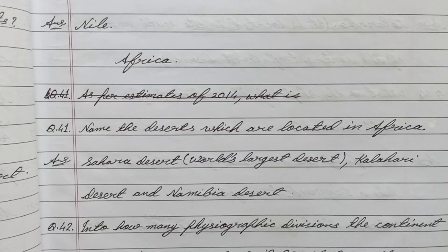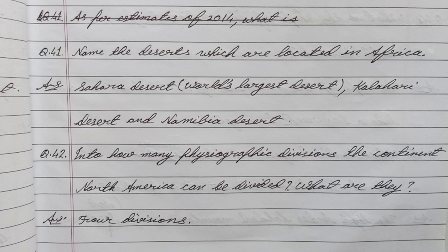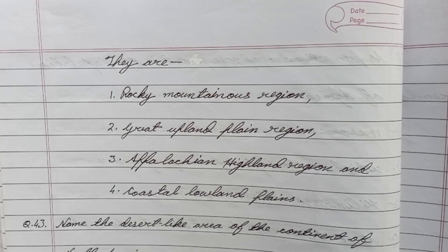Question 41: Name the deserts which are located in Africa. Answer: Sahara Desert, Kalahari Desert, and Namibia Desert. Question 42: Into how many physiographic divisions can the continent of North America be divided? Answer: 4 divisions — number 1: Rocky mountainous region, number 2: Great upland plain region, number 3: Appalachian Highland region, and number 4: Coastal lowland plains.